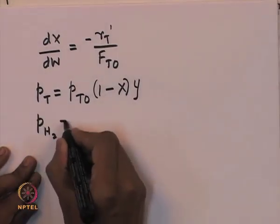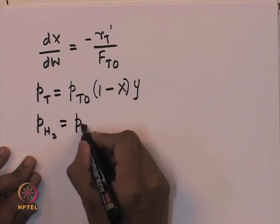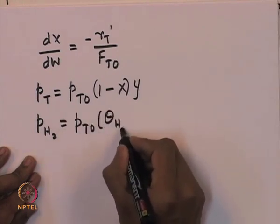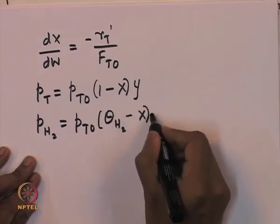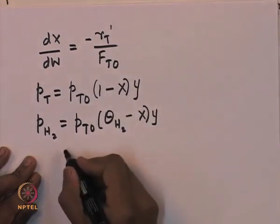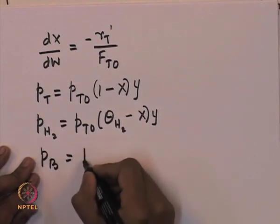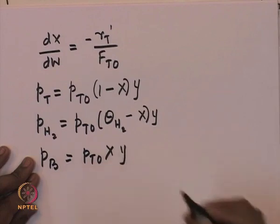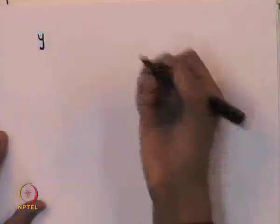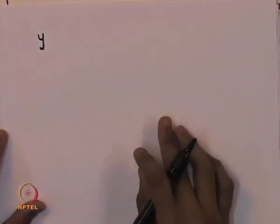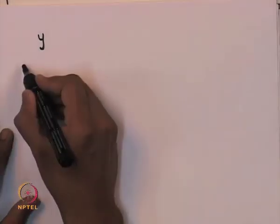Similarly, the partial pressure of hydrogen is expressed as PT0 into the feed ratio of hydrogen to toluene minus the conversion, multiplied by the mole fraction y. And for benzene, it will be PT0 into x into y. We will continue from there today. The first exercise is to find out what y — the mole fraction — is as a function of conversion inside the reactor.